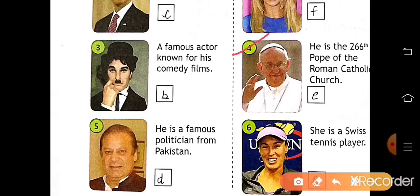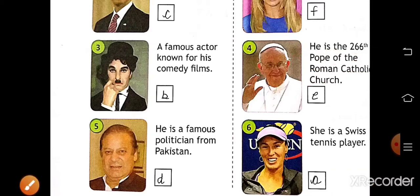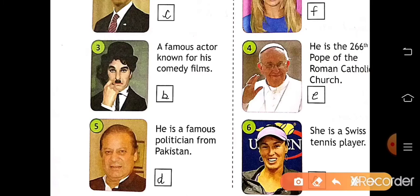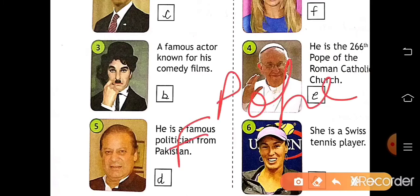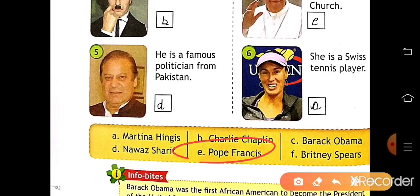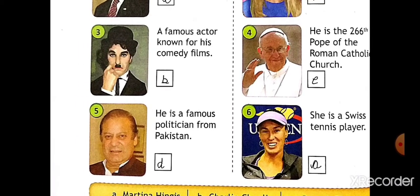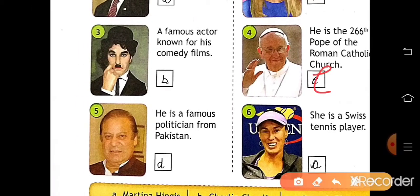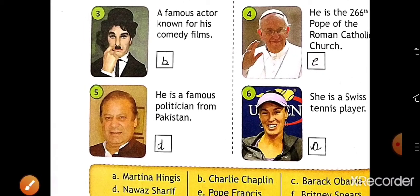Number four: he is the 266th Pope of the Roman Catholic Church — so he is Pope Francis. Write Pope Francis here. Pope Francis is at position E, so write E in the box.